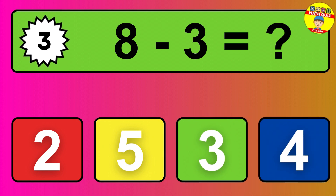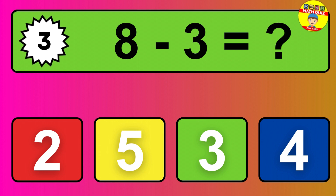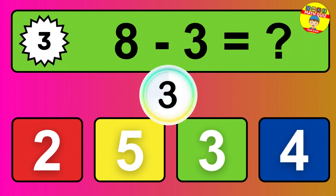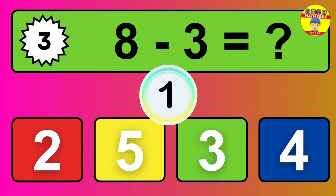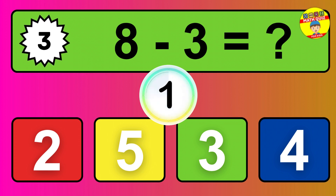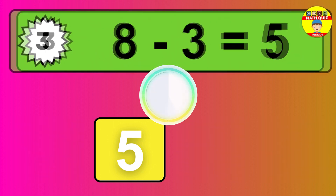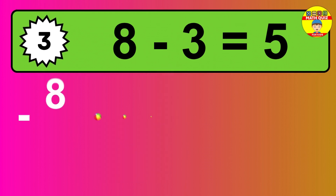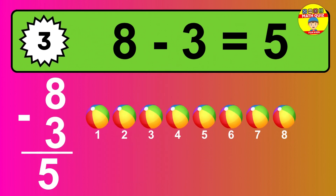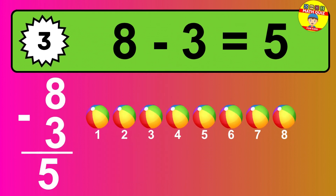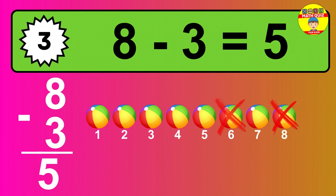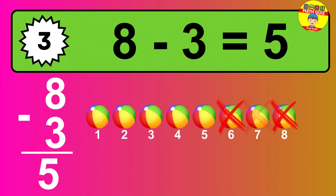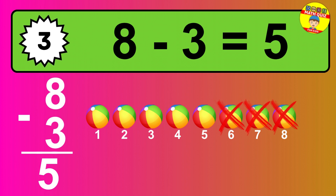Question 3: 8 minus 3 equals what? The answer is 8 minus 3 is 5. Let's count it: 1, 2, 3, 4, 5.